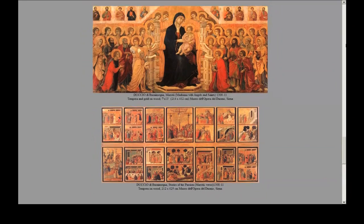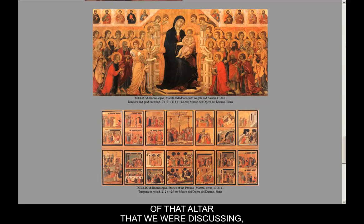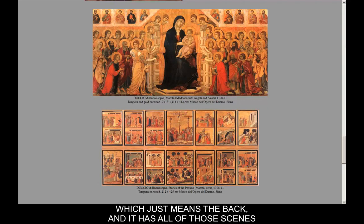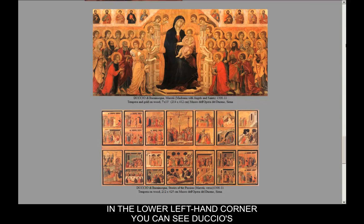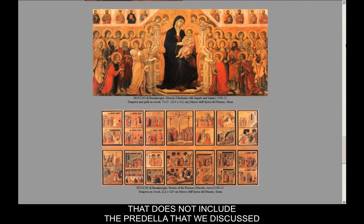What you see here is the front and back of the Maesta Altar. The bottom image is referred to as verso, meaning the back, and it has all of the scenes we've been discussing. In the lower left-hand corner you can see Duccio's Christ Entering Jerusalem. This does not include the predella, which would be the panel running where the captions appear underneath both pictures.